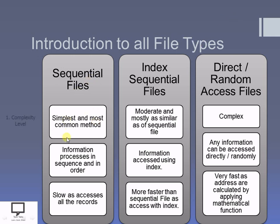In a sequential access file, the implementation is very simple and this is the most commonly used method. For index sequential files, the implementation is moderate — not very simple, but not very complex either — and mostly similar to the sequential access file, with the key difference being the index. For random or direct access files, the implementation is somewhat complex compared to the other two.